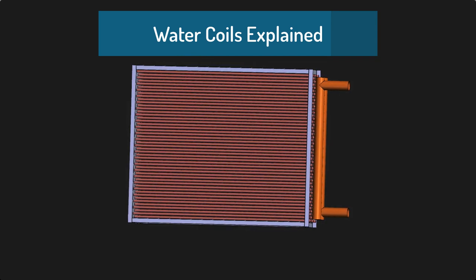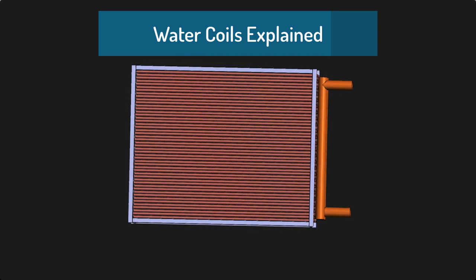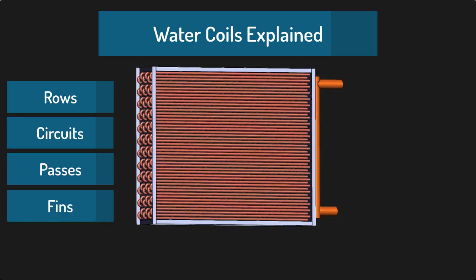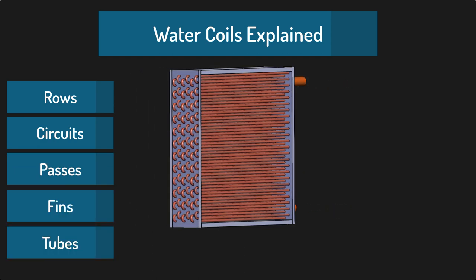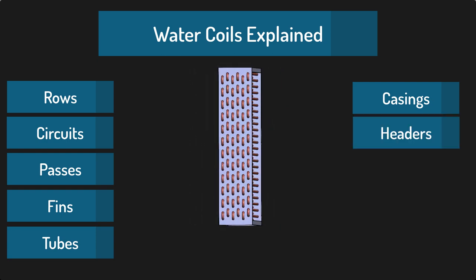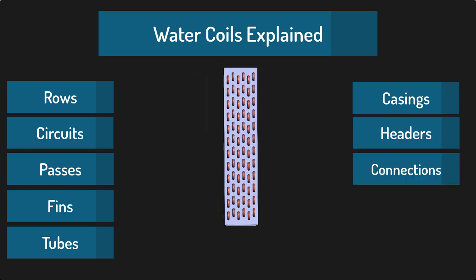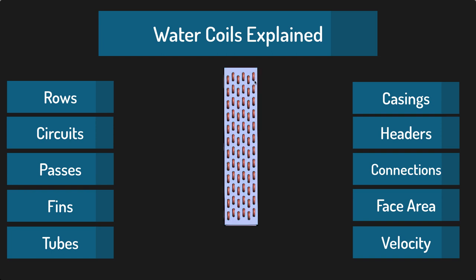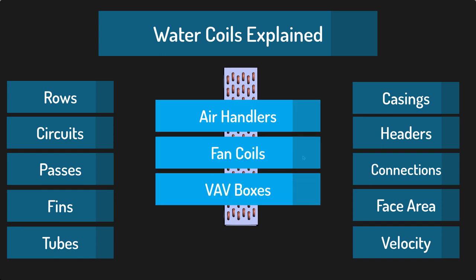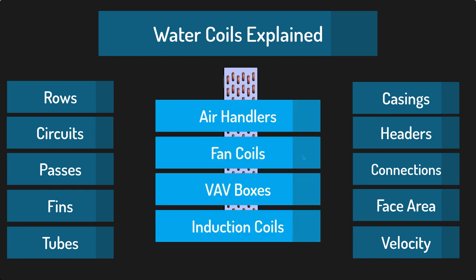In this video, we'll learn how coils are constructed and how to select coils for optimizing energy and performance. We'll learn all the parts of the coil assembly so that you can discuss coils with anyone, including engineers. We'll look at chilled water and heating hot water coils. Coils can be found in air handling units, fan coils, VAV boxes, and induction coils, to name a few.